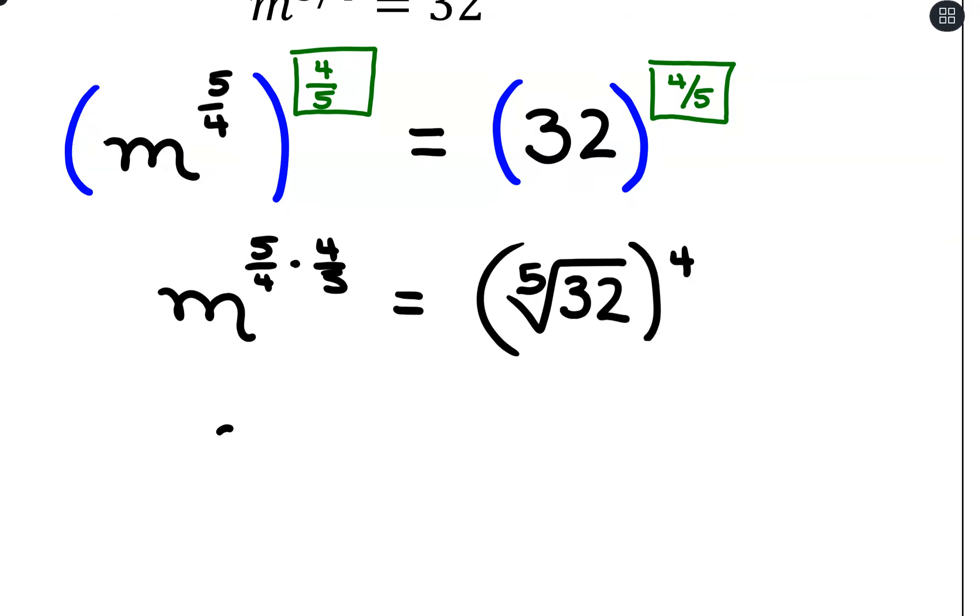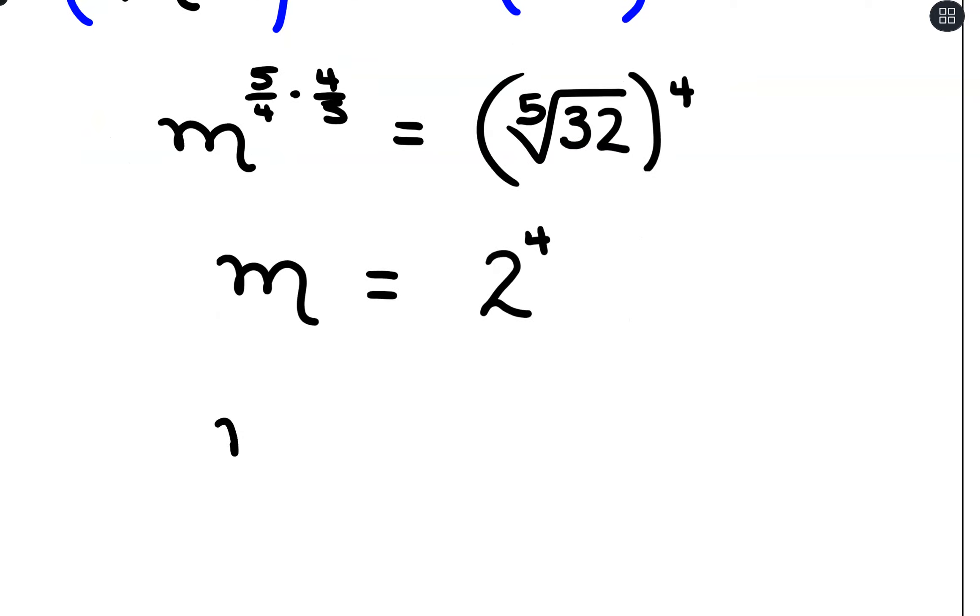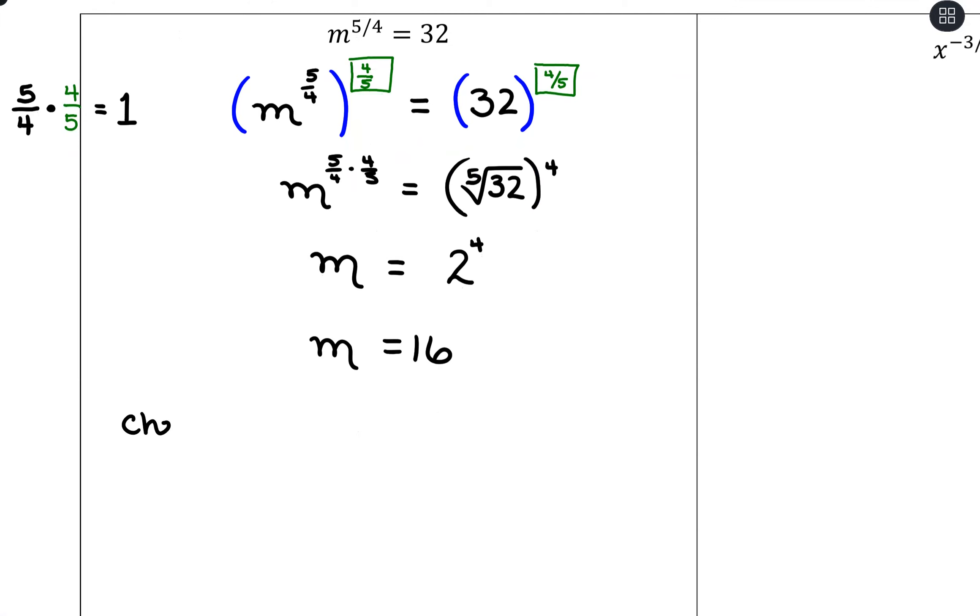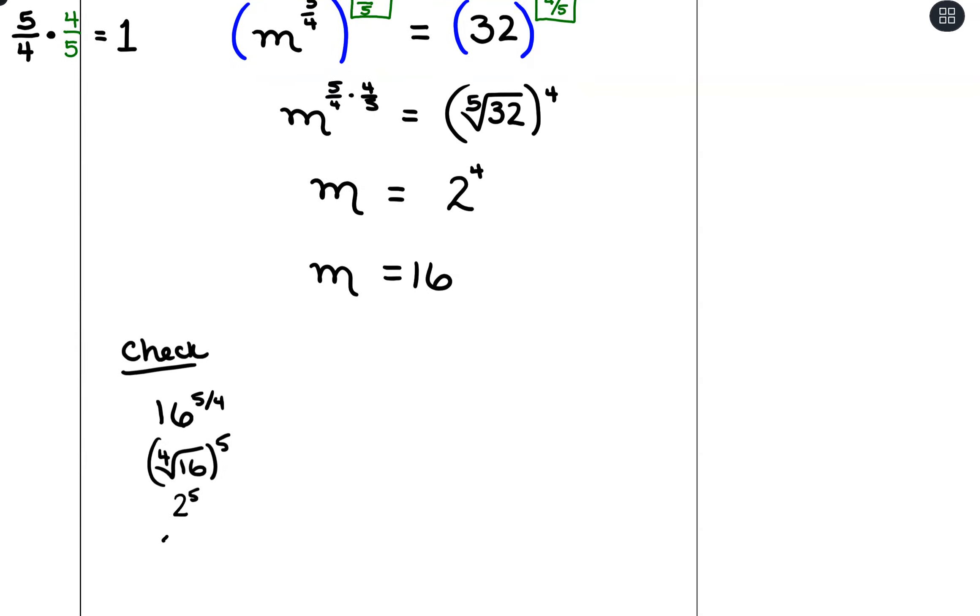So on the left-hand side, we would just have m and then equals, well, the 5th root of 32 is 2. Raise that to the 4th power for 4 times 4, which is 16. And then we're going to go our same route of checking our answer. So we would check. So 16 to the 5 fourths. Well, that would be the 4th root of 16 to the 5th power, which is 2 to the 5th, which is 32. And we're all good there.